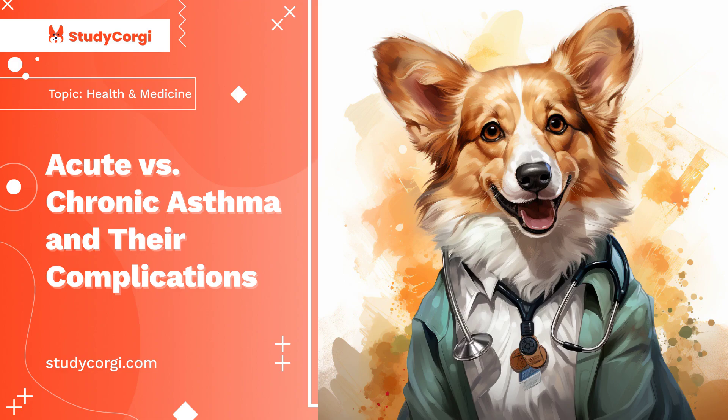The structural changes that occur in this condition involve the thickening of the sub-basement membrane, hypertrophy, and hyperplasia of smooth muscles in the airways, sub-epithelial fibrosis, and the dilation and proliferation of blood cells together with hypersecretion and hyperplasia of the mucus gland. During an attack, the inflammatory mechanism is the same as that of acute asthma discussed earlier.